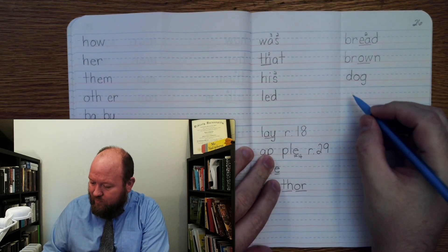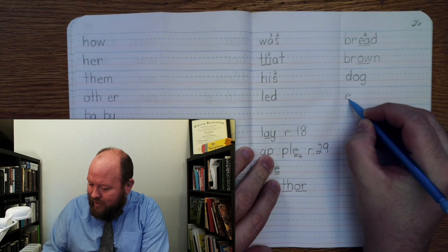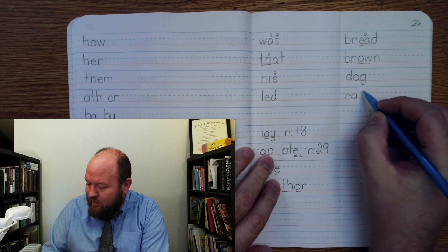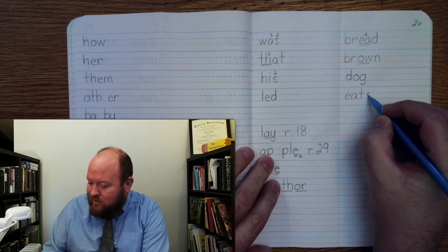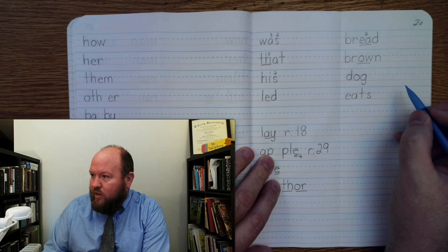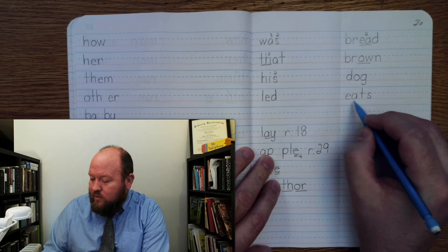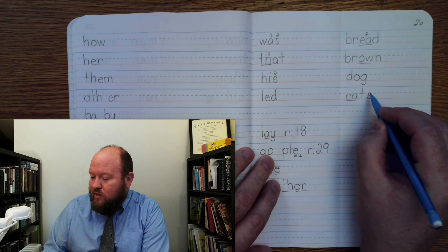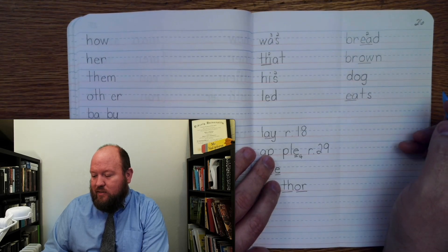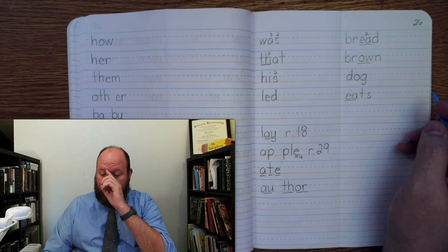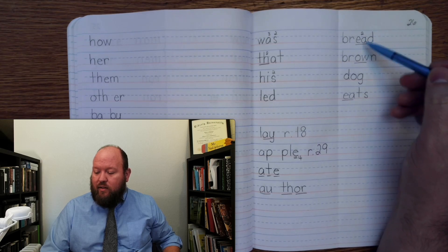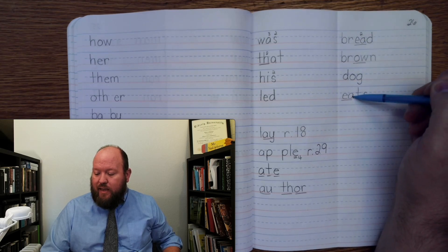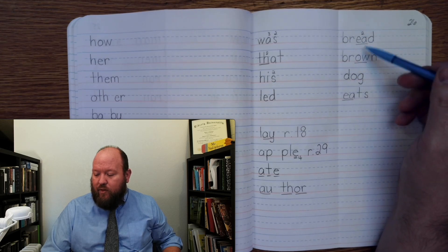Write eats. E — tss. Markings. E once. Tss. Eats. And you can notice that bread and eats both have that same EA phonogram.